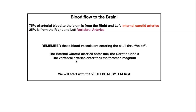The two internal carotid arteries and the two vertebral arteries. These blood vessels are entering the skull through holes — they've got to get to the brain through these holes in the skull. The internal carotid arteries enter through the carotid canals, and the vertebral arteries are going to enter through the foramen magnum.